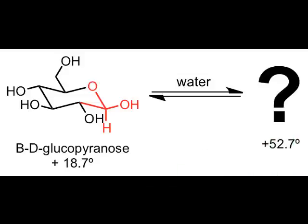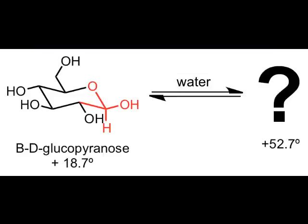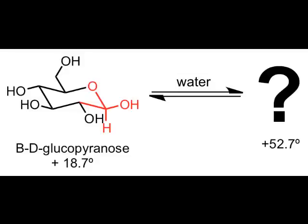Because optical activity is directly related to the configuration of the sugar stereocenters, the change in specific rotation suggests that the pure beta-anomer is undergoing conversion to some other chiral compound. Armed with only this information, we have no way of knowing what this compound is unless we separate it from the beta-anomer and characterize it.